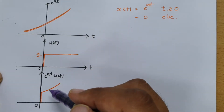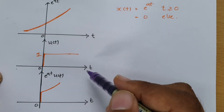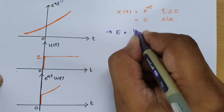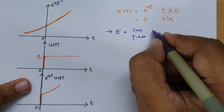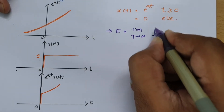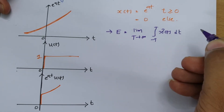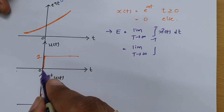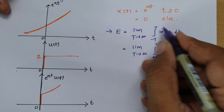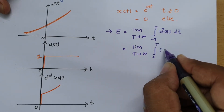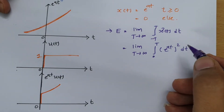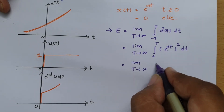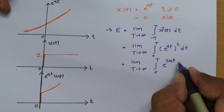This signal has an infinite time period, so we calculate energy as: E = limit as T→∞ of the integral from −T to T of |x(t)|² dt. Since the signal is nonzero only from 0 to T, this becomes the limit as T→∞ of the integral from 0 to T of e^(at) squared dt, which equals the integral of e^(2at) dt.